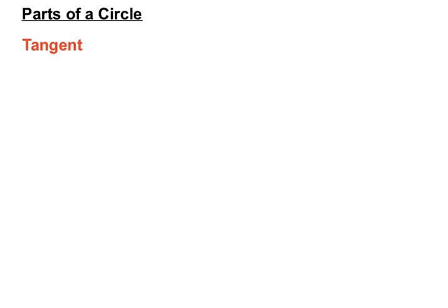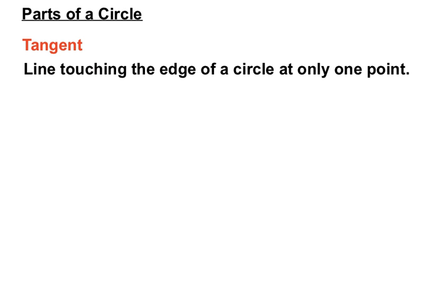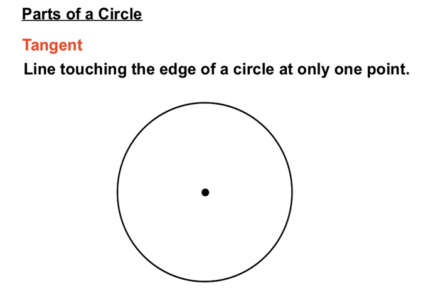We have a tangent. It's a line touching the edge of a circle at only one point. So it goes up to the circle and just touches it at one point, and we call that line a tangent.